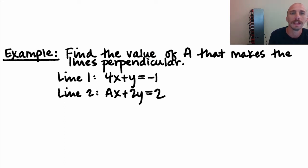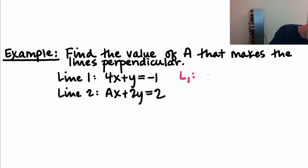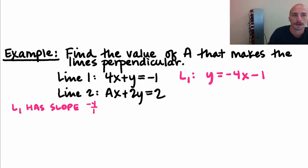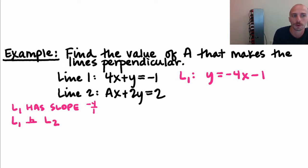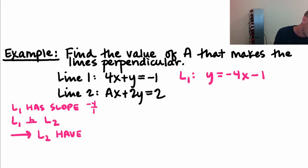Now let's work one where we find the value of a that makes two lines perpendicular. I'm going to start with line one and solve for y. Subtracting 4x from both sides, I can see that the slope of line one is negative four. Since L1 and L2 are supposed to be perpendicular, L2 has to have slope positive one-fourth.